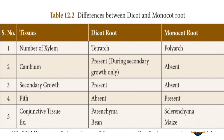This is an important 5-mark, 4-mark, or 2-mark question. Differences between dicot and monocot root: The xylem is tetrarch in dicot root and polyarch in monocot root. Cambium is present in dicot root leading to secondary growth, but cambium is absent in monocot root so secondary growth is absent. Conjunctive tissue is parenchyma in dicot root and sclerenchyma in monocot root. Examples: bean for dicot and maize for monocot. Surely, they will ask about the dicot root.